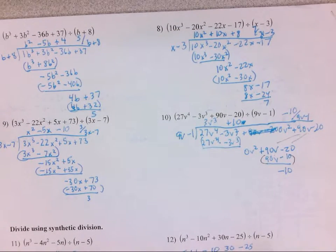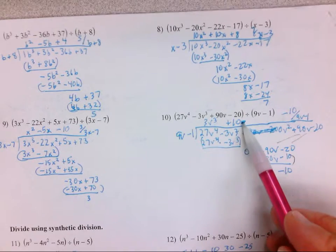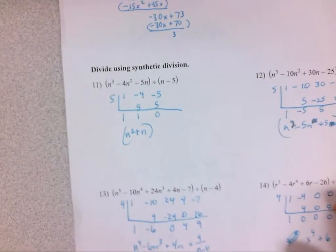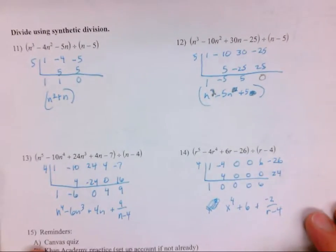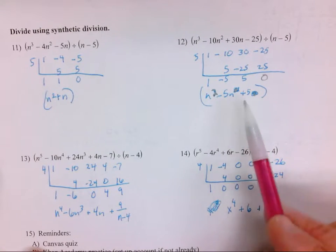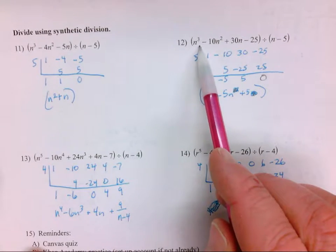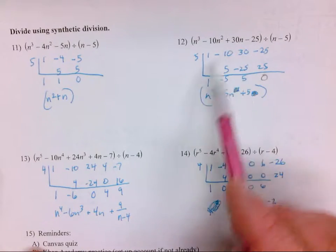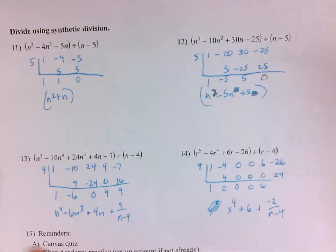It just skips a power. Again, synthetic division that says n squared minus 5n plus 5. The answer is going to be one power less than what your original value where you're dividing.